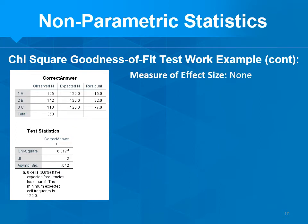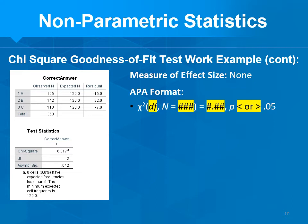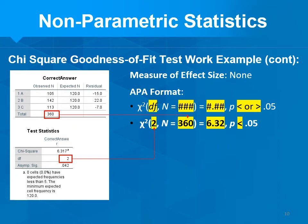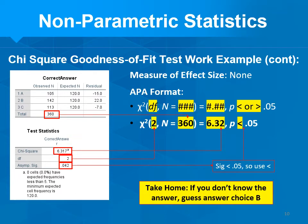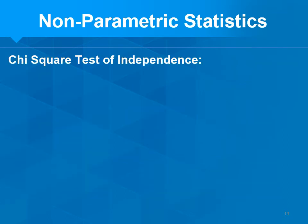Our measure of effect size — there isn't one. APA format: here's the general form, all filled in. Degrees of freedom come right from the table, N is the total sample size, the chi-square value is rounded to two decimals, and P was less than 0.05. Now let's talk about one more chi-square test: the chi-square test of independence.